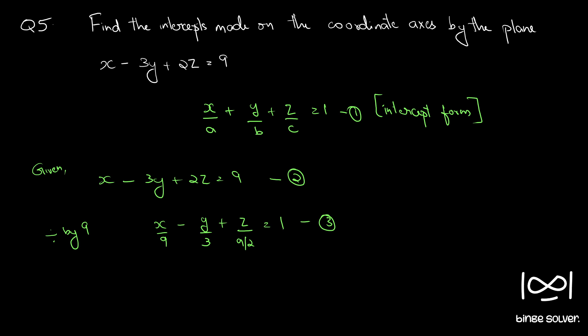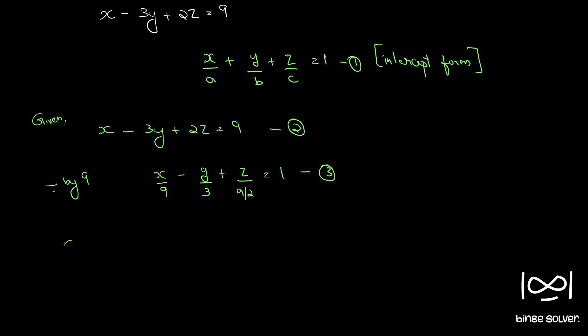Now, comparing 1 and 3. We have a equal to 9 and b equal to... this has to be plus. Here we can write plus minus 3. So b equal to minus 3, c equal to 9 by 2.